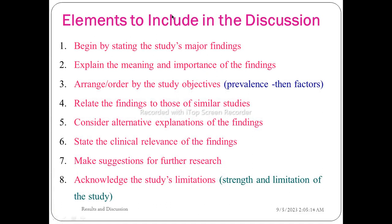Elements to include in the discussion: you can begin by stating the study's major findings — the prevalence of the diseases and associated factors found in the studies. That explains the meaning and the importance of the findings.